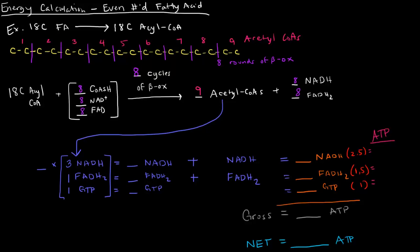But these acetyl-CoA's go to the TCA cycle, or the Krebs cycle. And when they go to the Krebs cycle, each acetyl-CoA goes through the Krebs cycle once and yields 3 NADH's, 1 FADH2, and 1 GTP.